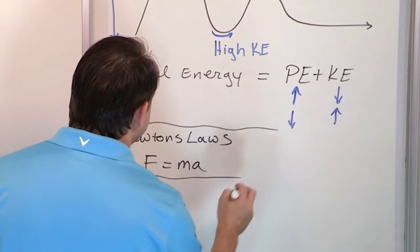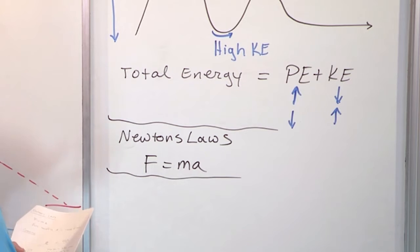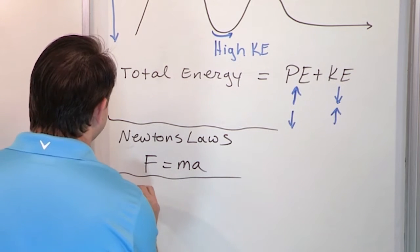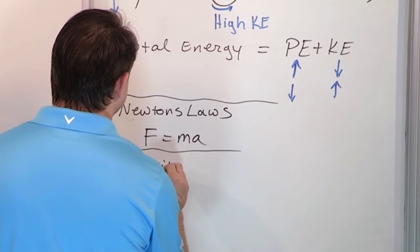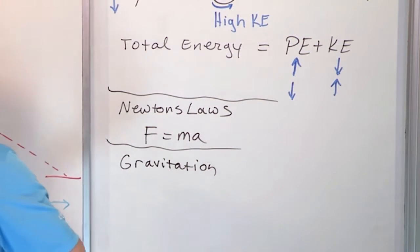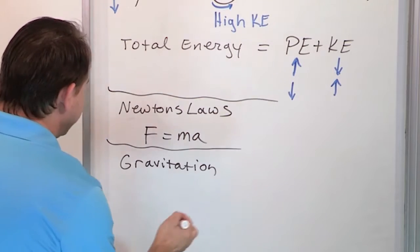And then after we talk about Newton's laws for a while and solve tons of different types of problems, we're going to talk about Newton's law of gravitation, which is a really big deal obviously because we live on Earth and there's gravity here. What does this mean though?